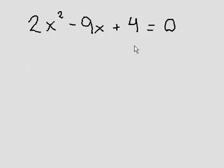At first it may seem a bit complicated because we need to multiply these two numbers, the 2 and the 4, to get 8, of course. So we're going to look for two numbers that multiply to 8 and add up to the middle term, which is negative 9.